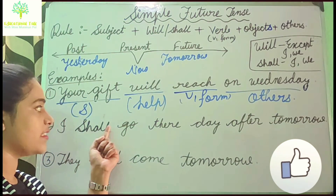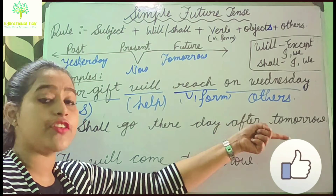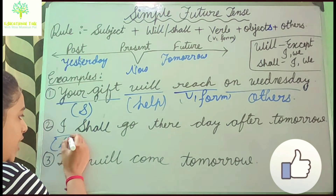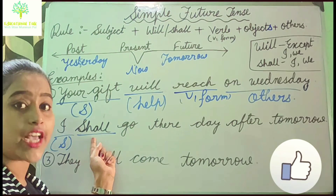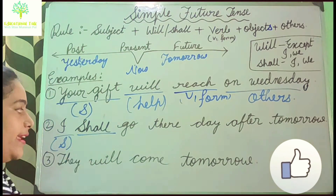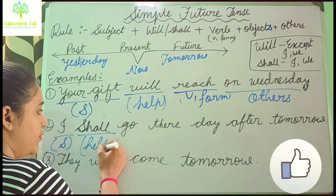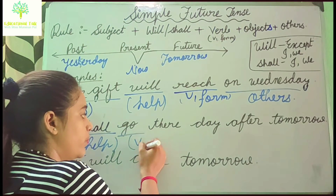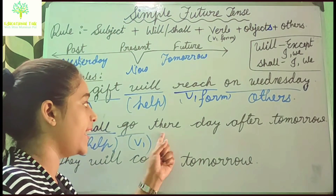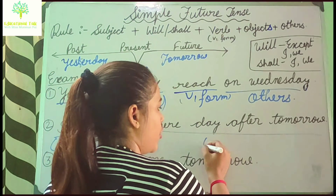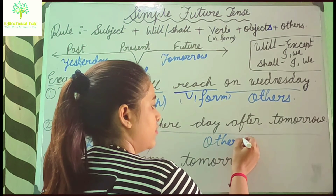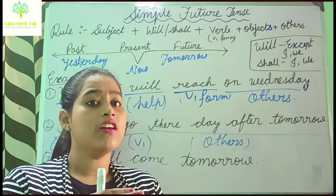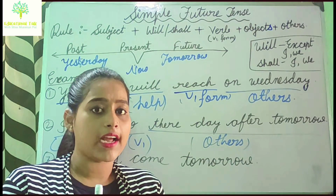Next example: 'I shall go there day after tomorrow.' Here 'I' is the subject, so I have used 'shall' as the helping verb. 'Go' is the V1 form. 'There' and 'day after tomorrow' are others. Day after tomorrow means I will do that action later, so this is why it is simple future tense.